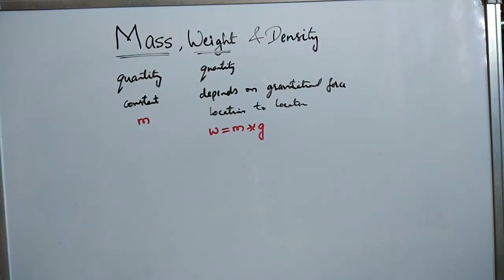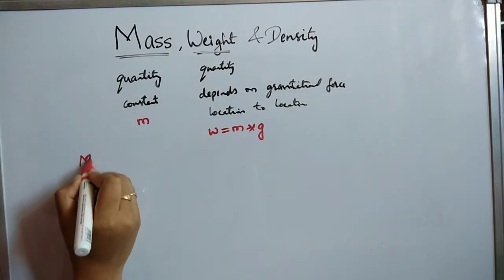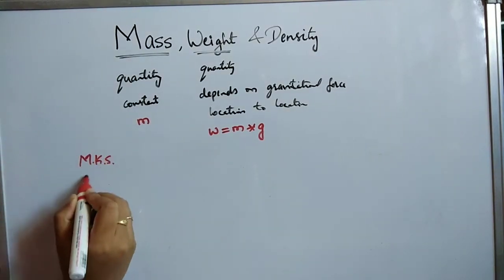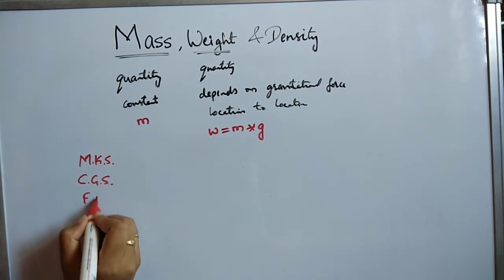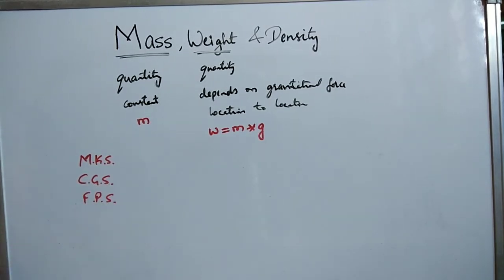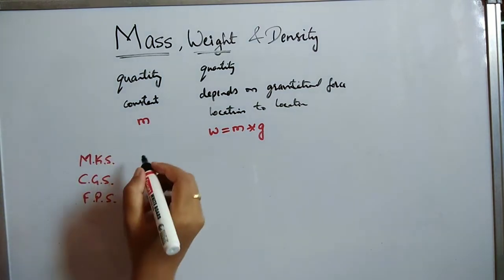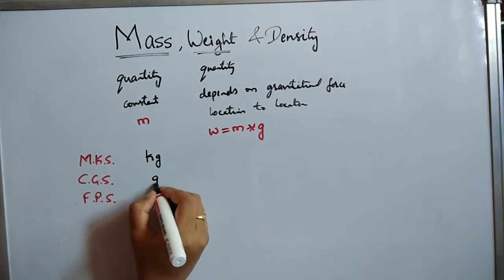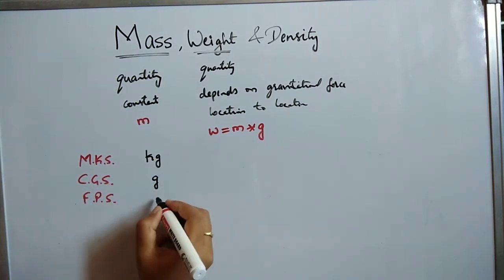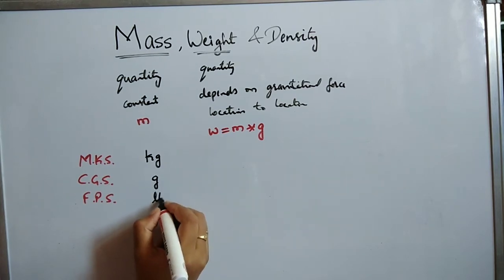Now we will see the units of mass and weight. We have already studied about the MKS system, CGS system and FPS system. In the MKS system, the unit of mass is kg. In the CGS system, it is gram. In the FPS system, it is pound.